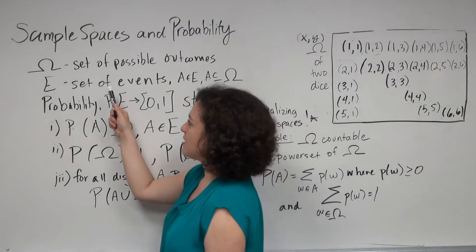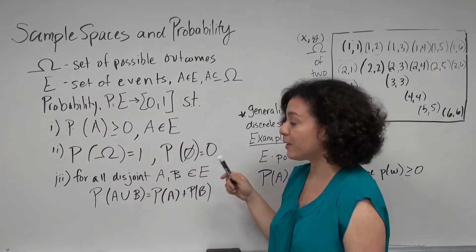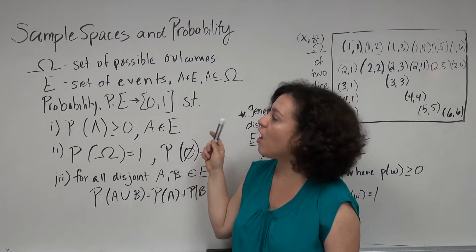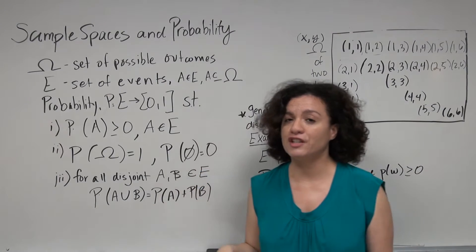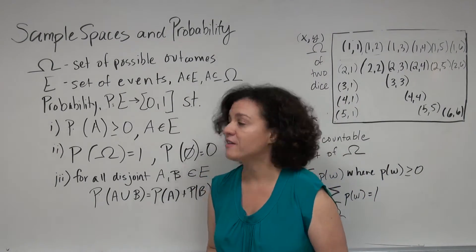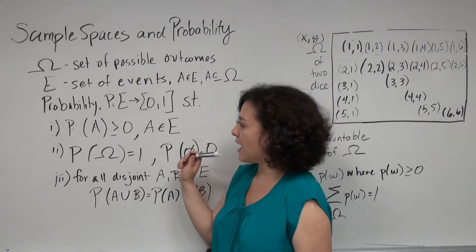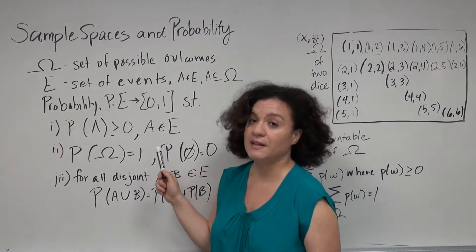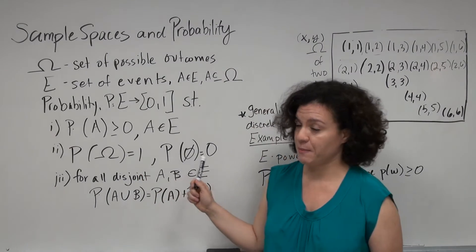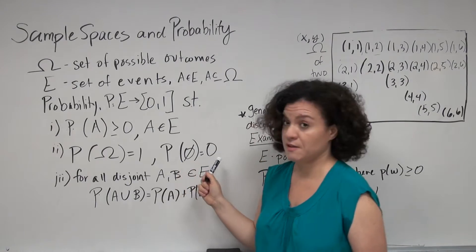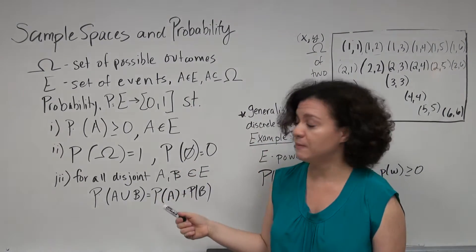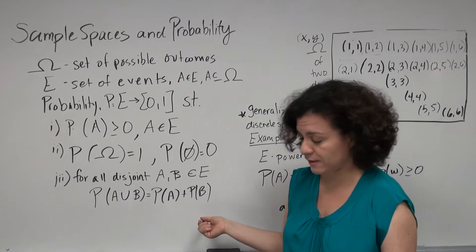The sample space, big omega, is a set of all possible outcomes, and the set of events are subsets of the sample space. Our probability function is a real-valued function from the set of events to [0, 1], such that for every event the probability is non-negative, the probability of the entire sample space is 1 and the empty set is 0, and for all disjoint events A and B, the probability of A or B is equal to the sum of their probabilities.